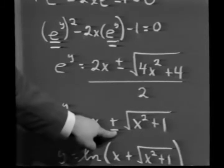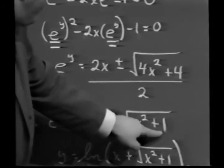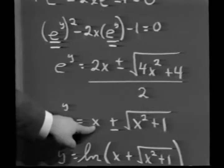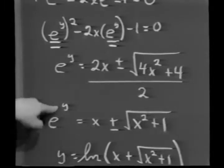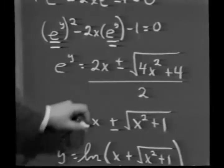Consequently, if I use the minus sign here, I'd be taking away more than what I had. That would make my answer negative, which would be a contradiction since e to the y can't be negative.